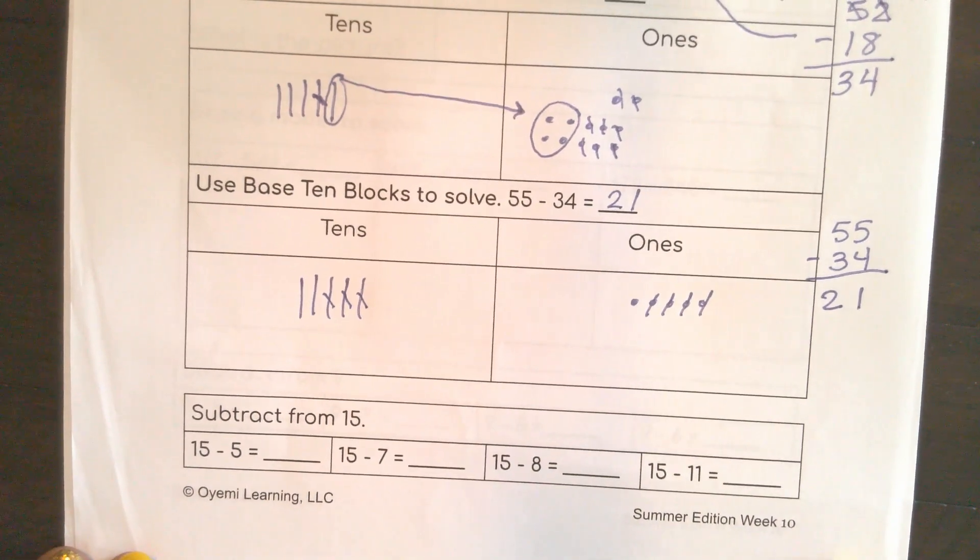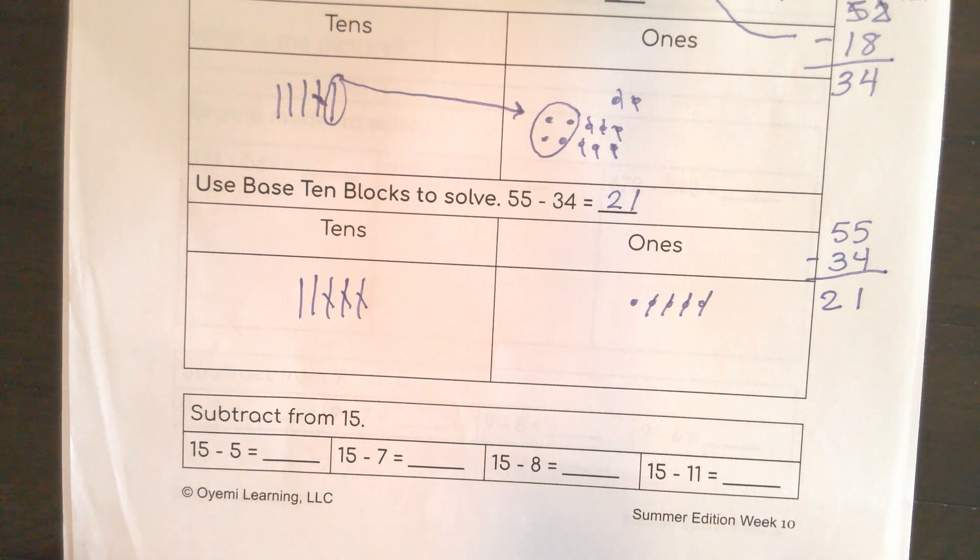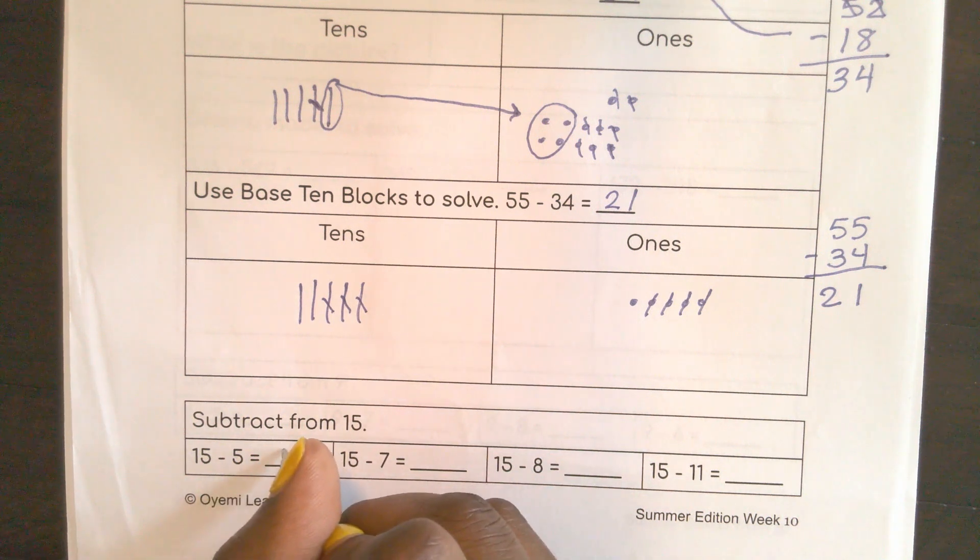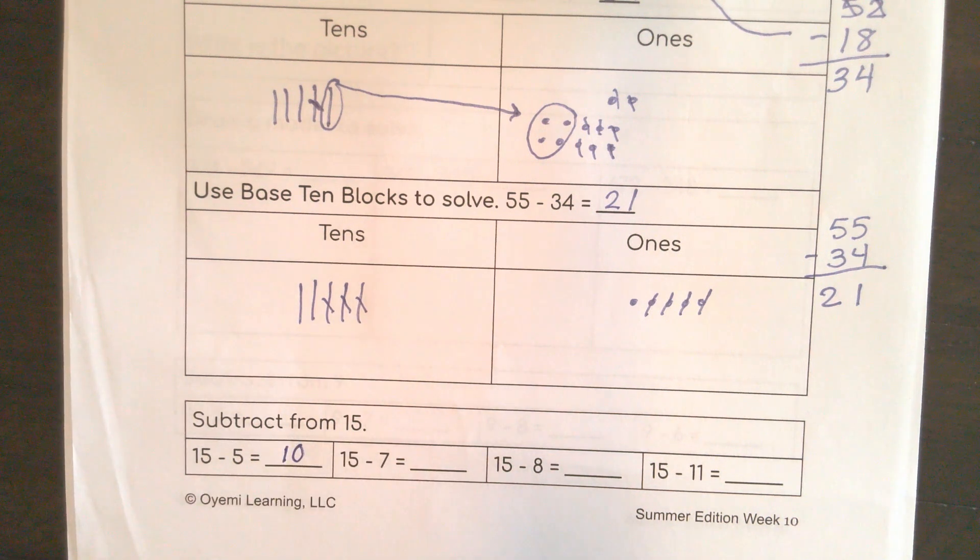So here I'm going to use what I know to help me subtract from 15. 15 is a teen number. It is 10 and 5 ones. So if I have 15 minus 5, I would just need 10 to complete that fact family.